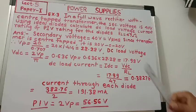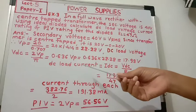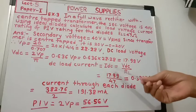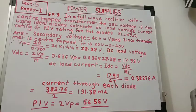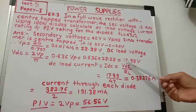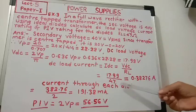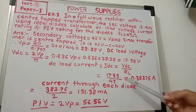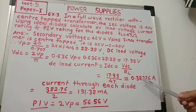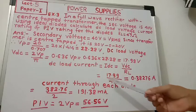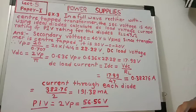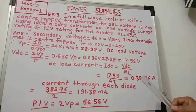Now we have to calculate DC load current. We know that current I is equal to V upon R. So DC load current IL, or IDC, is equal to Vdc upon RL. Vdc is 17.99 volts and RL is 47 ohms. So 17.99 divided by 47 equals 0.38276 ampere. You can use a log table for this calculation: log of 17.99 minus log of 47, then take the anti-log, which gives 0.38276 ampere.